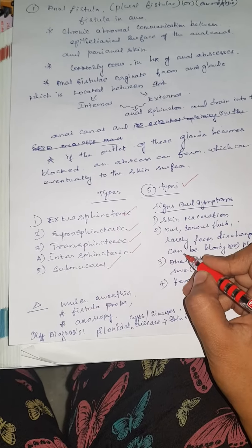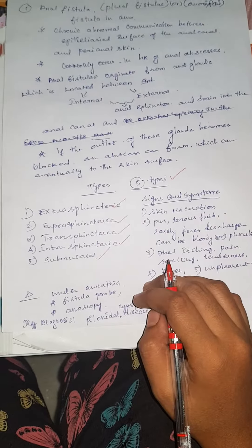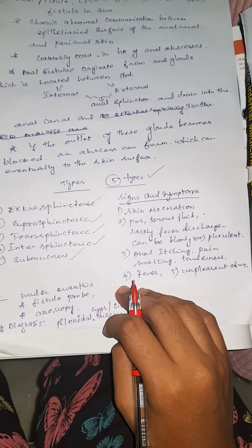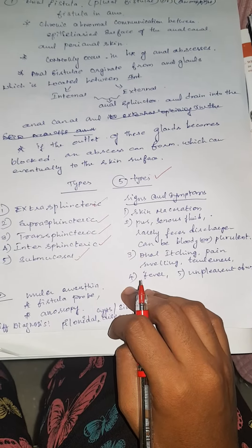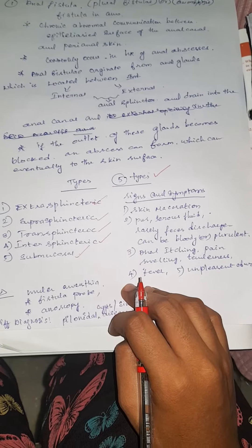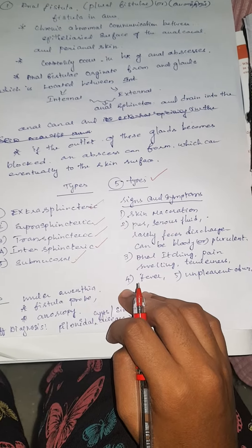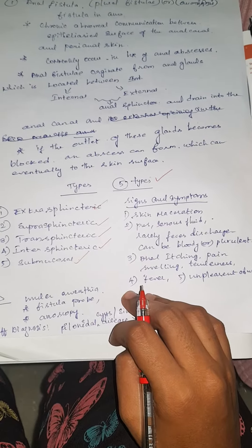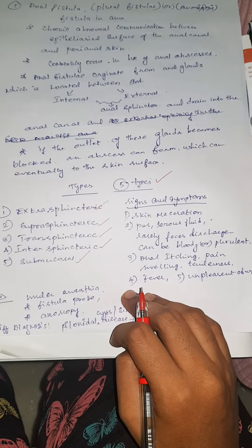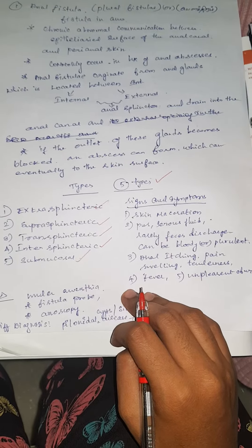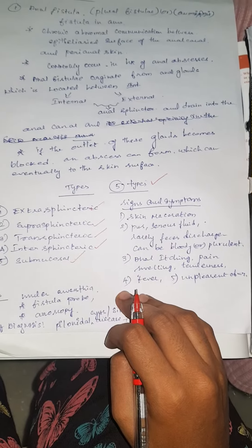The signs and symptoms of anal fistula include mainly skin maceration, pus, and serous fluid coming out of the skin. Rarely, fecal discharge can be bloody and malodorous. Other symptoms include anal itching and pain, swelling with tenderness, fever, and an unpleasant odour from the anal canal.